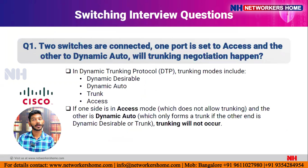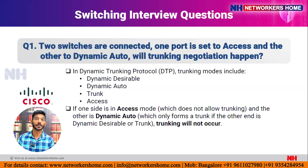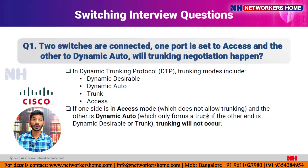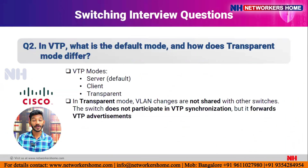Dynamic desirable initiates trunking negotiation; dynamic auto passively waits; access port is statically access; and trunk port allows trunking negotiation. Here, one port is access and the other is dynamic auto. Since access does not allow trunking and dynamic auto only forms a trunk if the other end is dynamic desirable or trunk, negotiation will not happen.